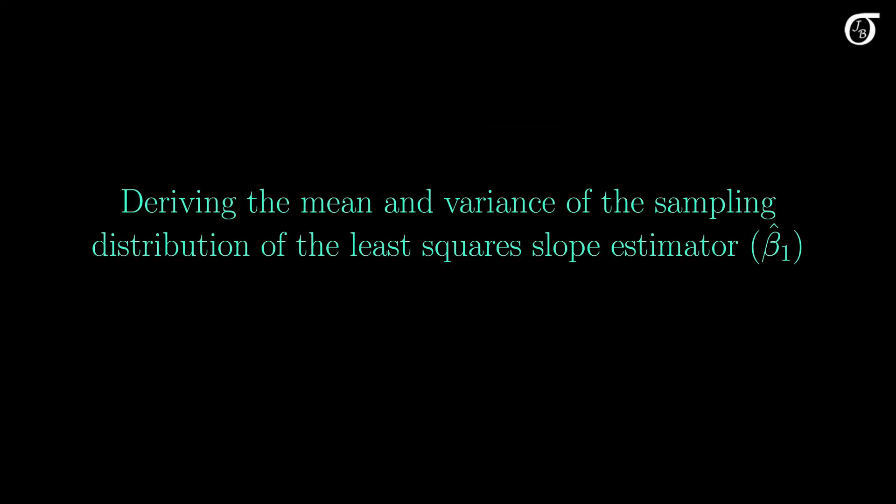Here I'm going to derive the mean and variance of the least squares slope estimator beta1 hat in simple linear regression. I'll also briefly discuss the assumptions of the model, and I'll discuss what assumptions I'm making along the way.